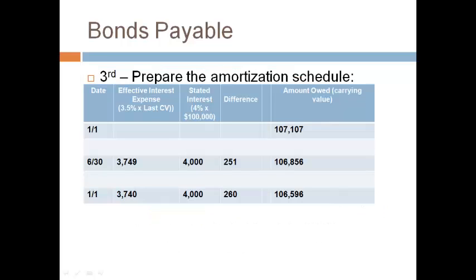The next step is to prepare the amortization schedule. Write the bond dates down the left side — bond dates are dates stated in the bond contract. Leave room to insert rows for transactions that occur on a date that is not a bond date. Write the column headings across the top: interest expense, stated interest, the difference, and the amount owed. We will not use a column for a premium or a discount. Start the table on the far right with the amount of cash that would have been exchanged on January 1st, the start of the bond contract — this is the present value of the cash flows for the full 10 years. The present value of the bond is more than the maturity value, and the bond was issued at a premium.